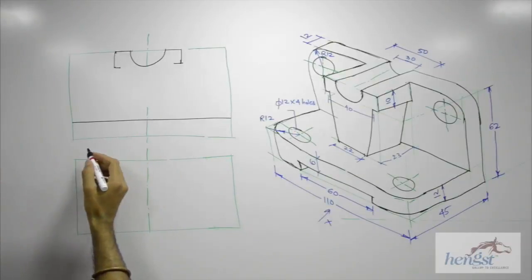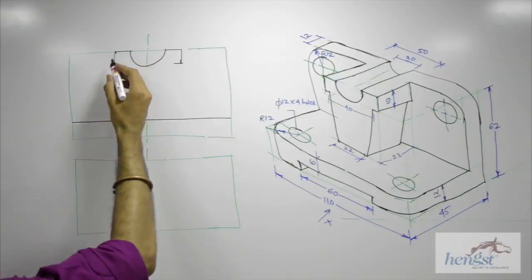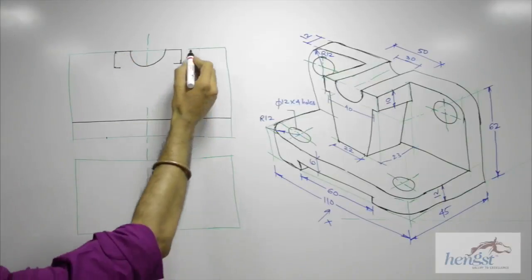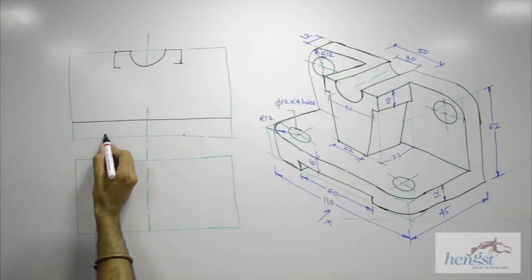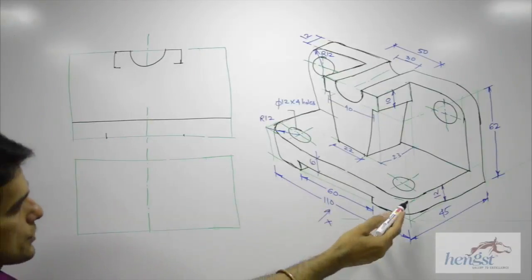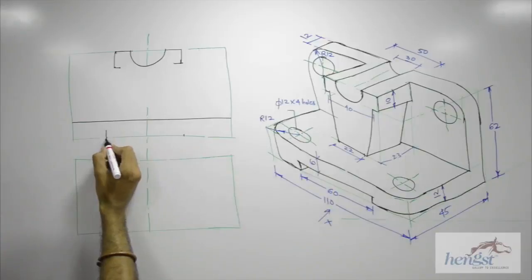So it would be 30, this is 50. Then go up by, how much is this? 12. This is 6, so go up by 6.